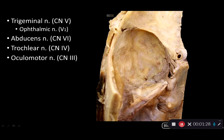We can also see just anterior to that, the trochlear nerve or cranial nerve 4, which innervates the superior oblique muscle. And then finally, this large nerve here is the oculomotor nerve, cranial nerve 3. Just medial to cranial nerve 3, we can see the left internal carotid artery heading up towards the brain.